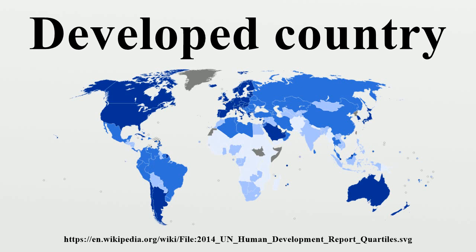As a non-UN member, the government of Taiwan calculates its own HDI, which had a value of 0.882 in 2011. Additionally, while the HDI for the Chinese Special Administrative Region of Hong Kong is calculated by the UN, it is not for Macau. The Macanese government calculated the territory's HDI to be 0.868 in 2011. These values place both Taiwan and Macau well within the list of countries with very high human development.